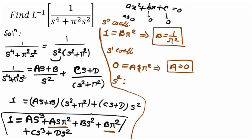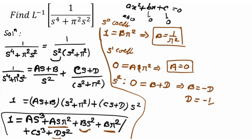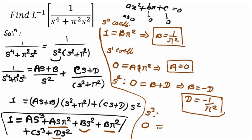Now equate the coefficient of s squared. On the left-hand side, there is no s squared, so it equals 0. On the right side, the s squared terms are B plus D. So we get B plus D equals 0, which means D equals minus B, so D equals minus 1 upon pi squared. Next, equating the coefficient of s cubed: on the left there is no s cubed, so 0 equals A plus C.